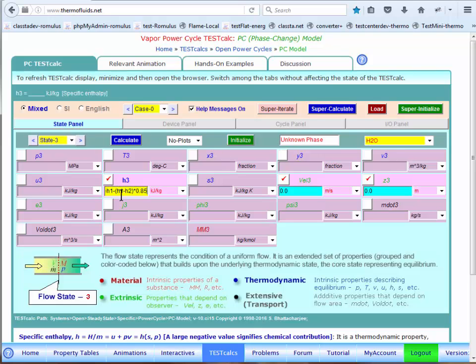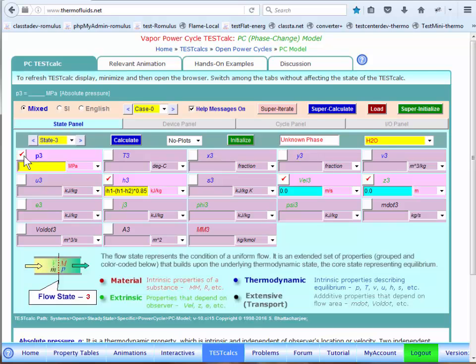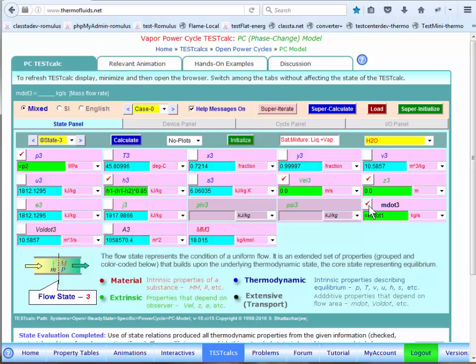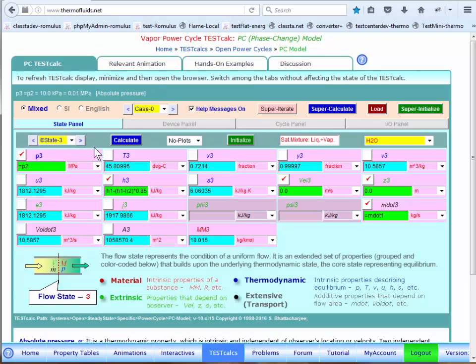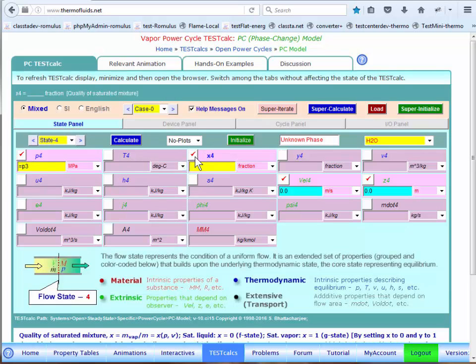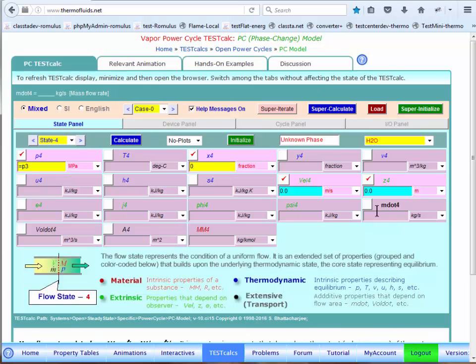We get a relationship between enthalpy at state 3 with enthalpy at state 1 and 2, which is H1 minus H2 times 0.85. It's simple algebra to show that this expression is valid. We also know the pressure. Pressure at the exit must be equal to the same as the isentropic exit pressure. And mass flow rate obviously doesn't change. That gives us the actual exit state. State 4 is very simple. Pressure doesn't change in the condenser, so P4 equals P3. And it is given that it's saturated liquid, so X4 must be 0.